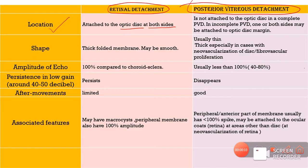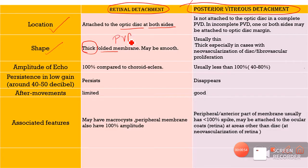Coming to the shape of these detachments, the retinal detachment will usually be quite thick compared to the thin posterior vitreous detachment. So retinal detachment will be thicker and moreover it will have a folded appearance, because of the proliferative vitreous retinopathy changes which occur after a retinal detachment. However, not all RDs are folded — some RDs like shallow RDs can also be smooth.